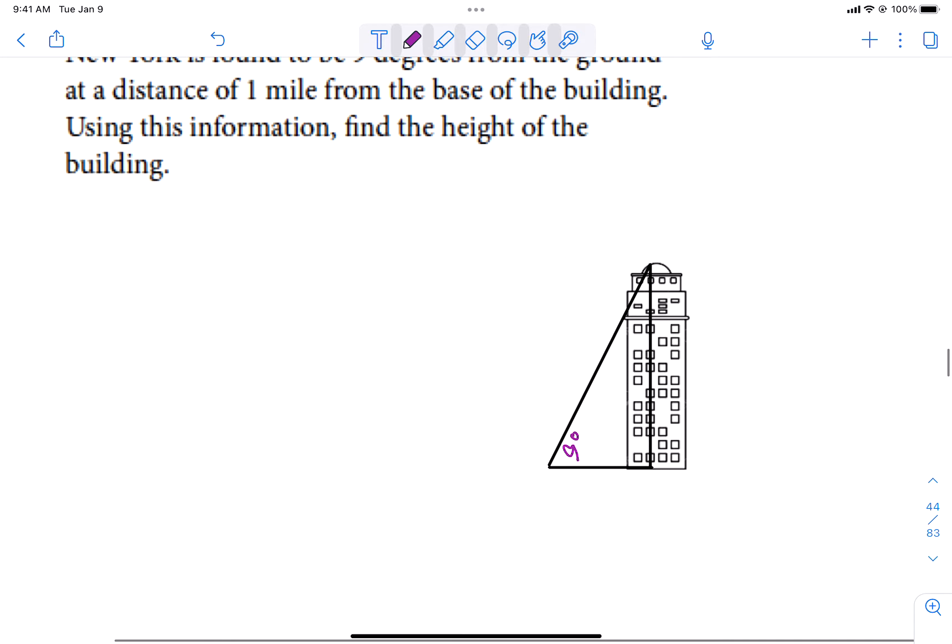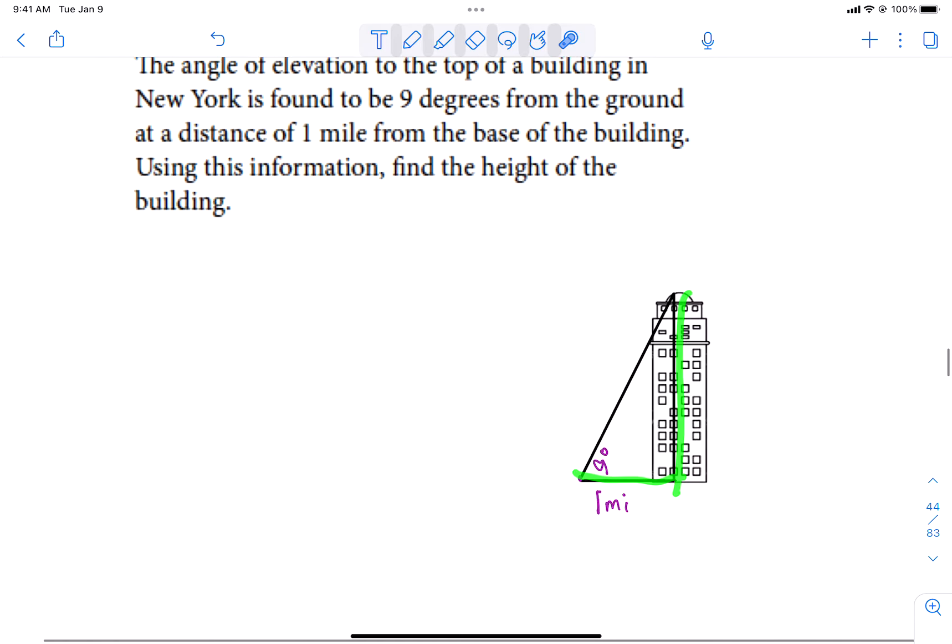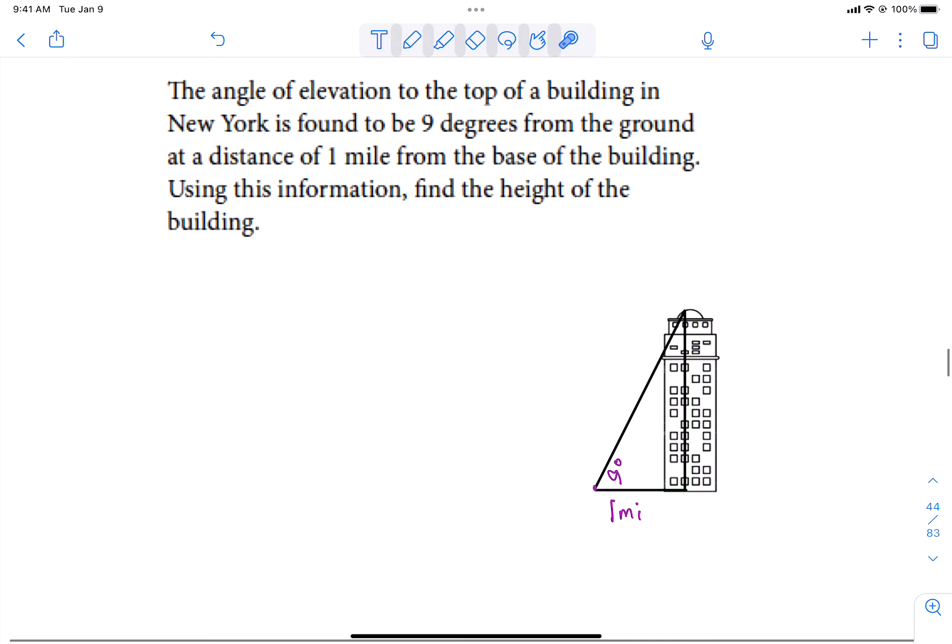And we are a distance of one mile out. So we have measured and that's one mile from the base of the building. It says using this information, find the height. So if we draw that over here so we can see the thing real clearly, this is one mile. This is nine degrees. And this is X. Now we usually don't measure the height of buildings in miles. So let's change this to 5,280 feet.